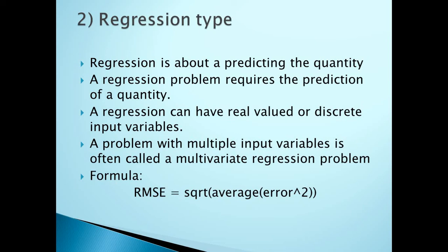An example of a regression type problem is housing price prediction. If you have a dataset with input attributes such as crime rate and the locality of the house, you need to calculate the value of the house based on those attributes. Here you are calculating an actual quantity, so house price prediction comes under the regression type of problem.